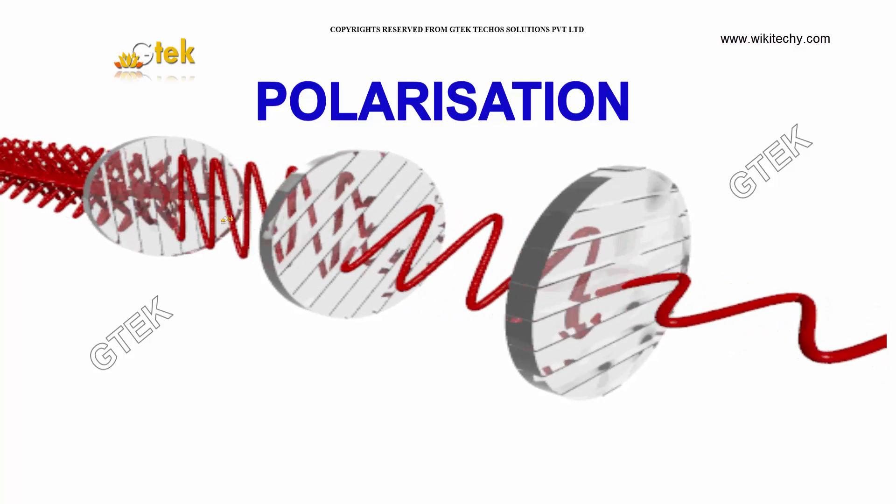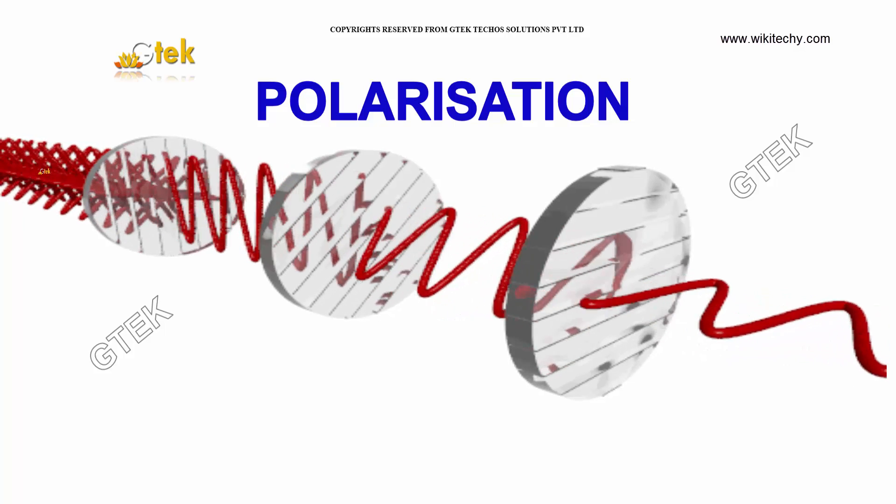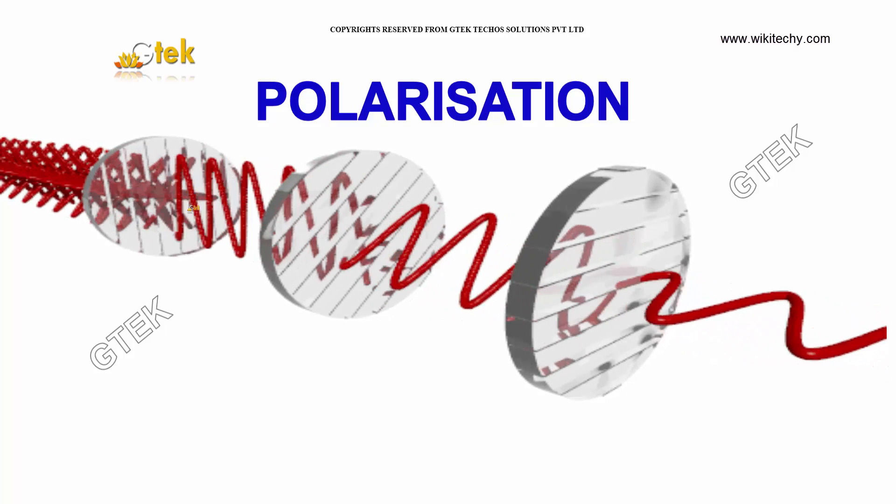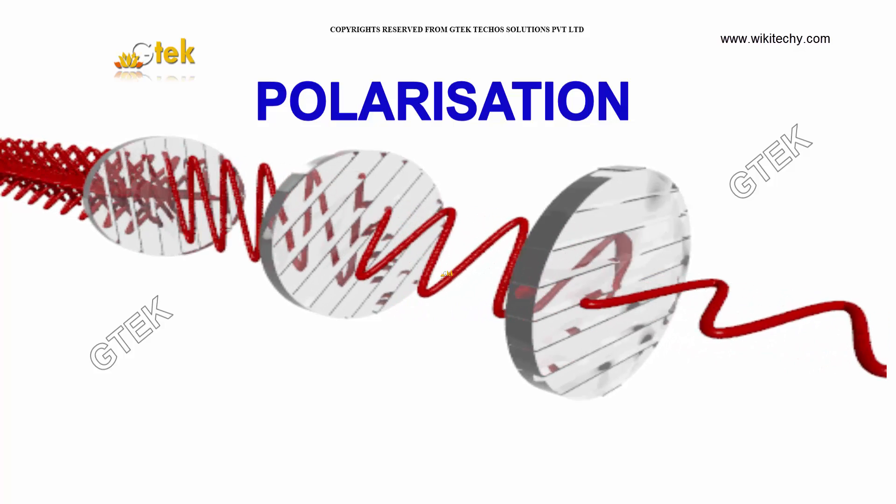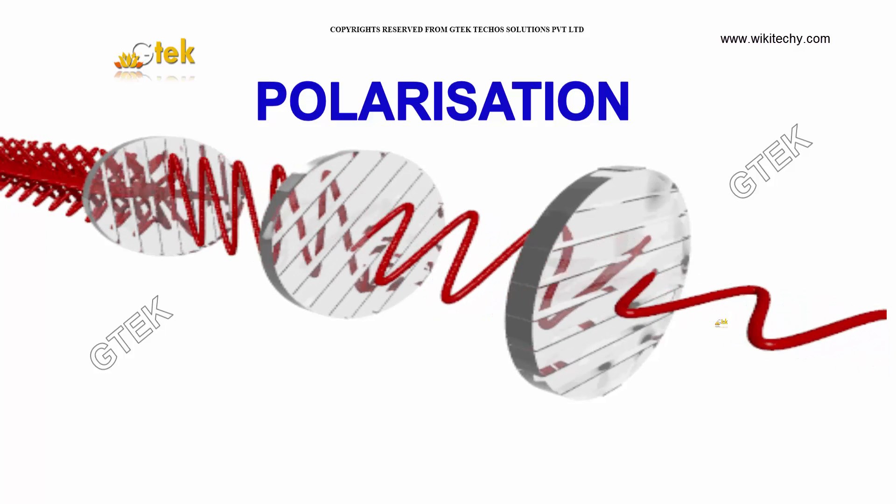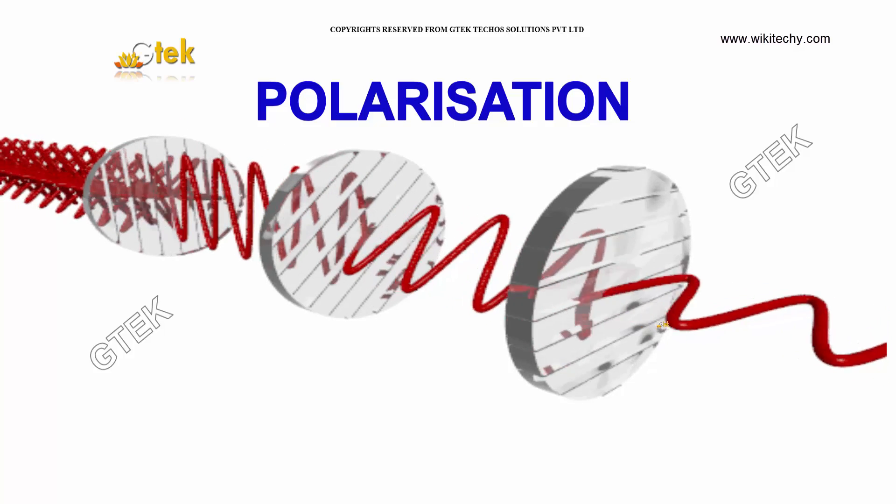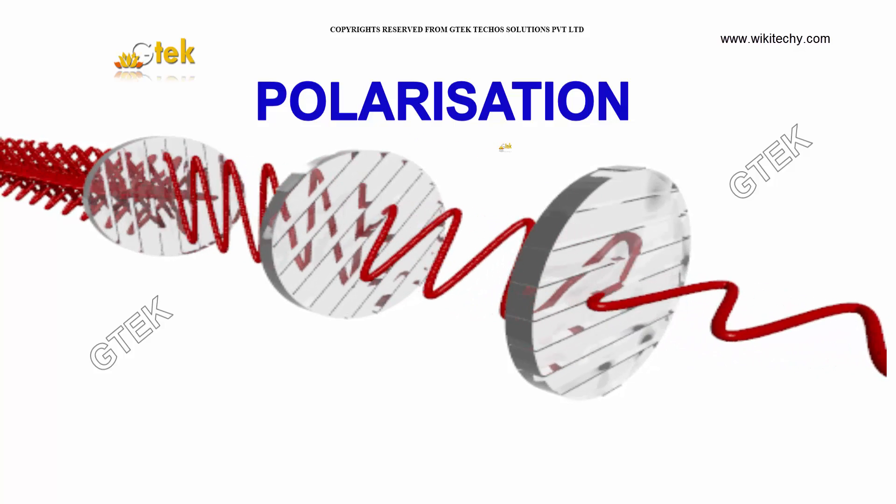Here is polarization. Polarization is when waves coming from different directions are streamlined in one direction, and we are able to change or streamline them in another direction also. So changing the phase and streamlining the input rays into output rays, that's called polarization.